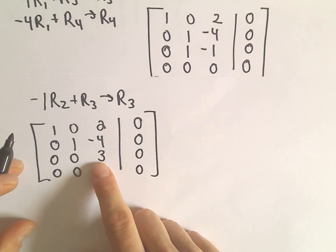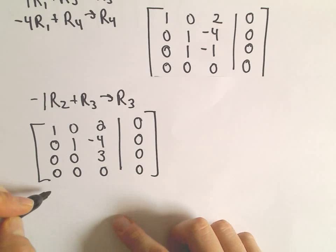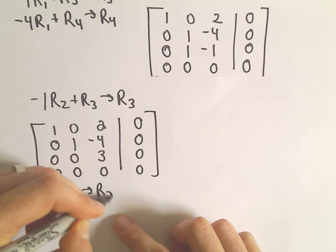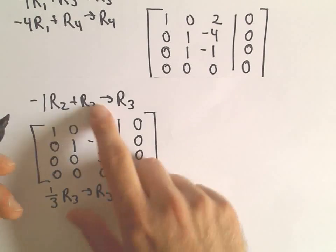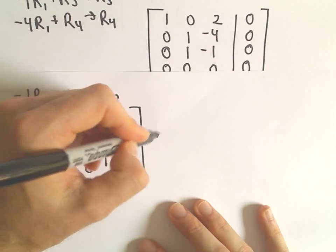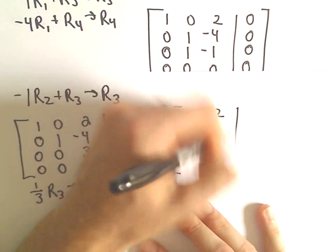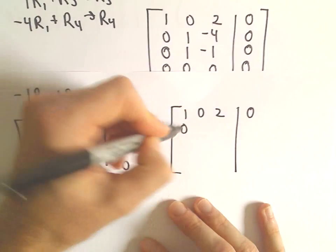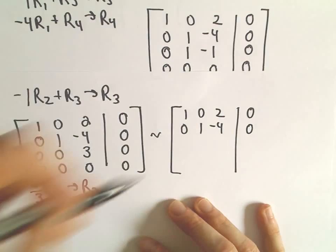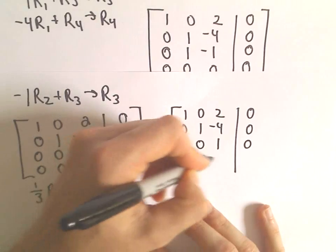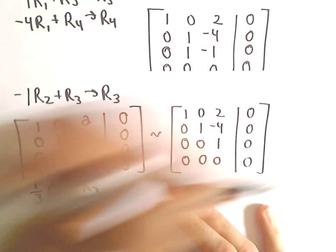We can take our third row and just divide that by 3 to make that third row, third column into a 1. So 1, 0, 2, 0; 0, 1, negative 4, 0; 0, 0, 1, 0; 0, 0, 0, 0. We're having fun.